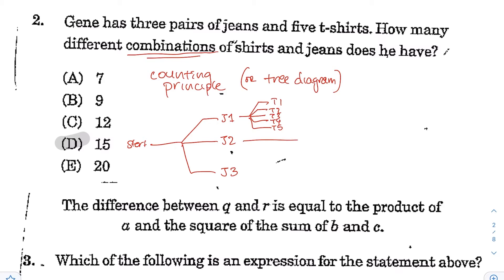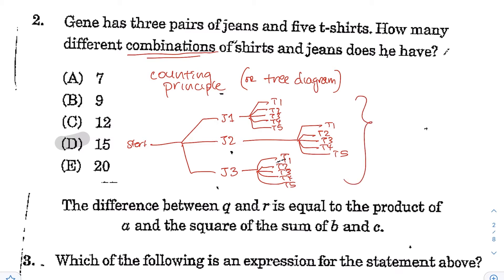The same thing applies for the second and third pairs of jeans — each branches out with t1, t2, t3, t4, and t5. To figure out how many combinations you have, you just add up all the branches. Here you have 5 plus 5 plus 5, or 15 total. So the answer is going to be choice D.